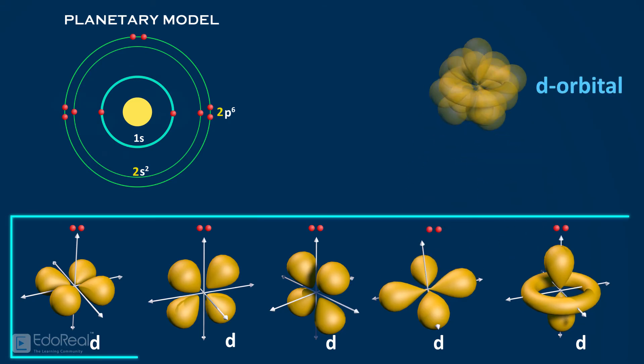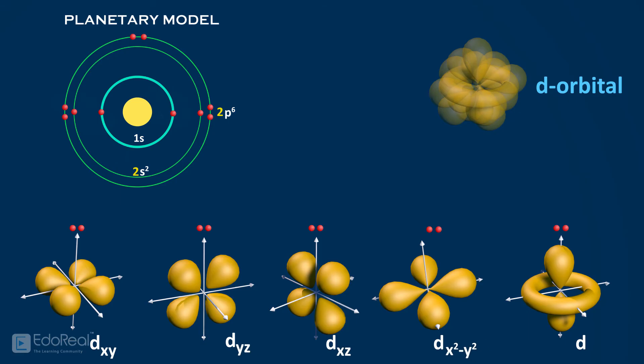The 5 spaces are oriented in different directions. We represent them with dxy, dyz, dzx, d x2 minus y2, and dz2. As d orbital comprises dxy, dyz, dzx, d x2 minus y2, and dz2, it is also called as d subshell.